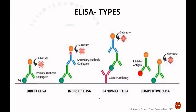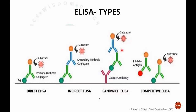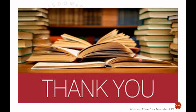In direct ELISA, antigen and antibody are used directly with a coloring substance. In indirect ELISA, antigen is coated first, then a primary antibody, then a secondary antibody labeled with an enzyme, which produces a color. In sandwich ELISA, the plate is coated with antibody, the sample containing antigen is added, and it produces a color. These are the main differences between the types of ELISA. That is all about ELISA. Thank you for watching.